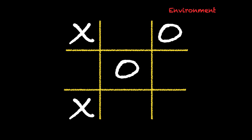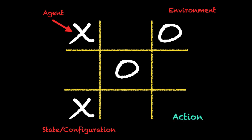This game consists of an environment which is the entire board of nine places that the agent interacts with. Here we consider the cross to be our agent and the circle to be our opponent. The agent and opponent play the game with each other, and the objective of the agent is to learn to play well so that it can defeat the opponent as many times as possible. There are different states or configurations — meaning different combinations of crosses and zeros in the environment. To change the state, you need to perform an action: when the agent puts a cross or the opponent puts a zero in a particular place, that is called an action.